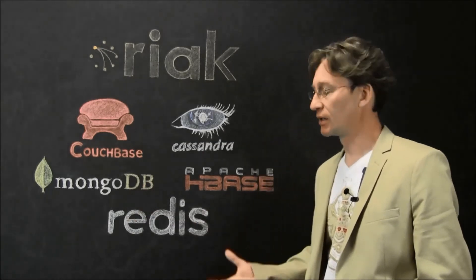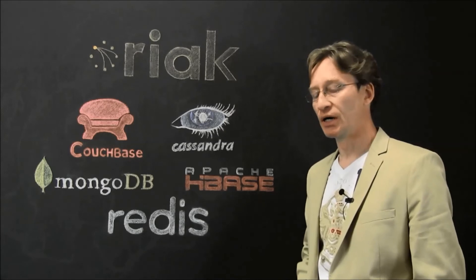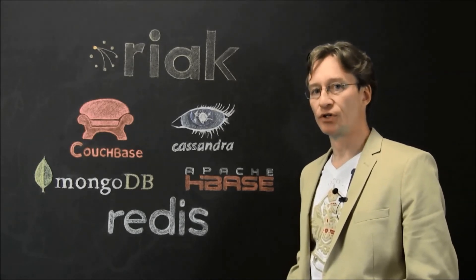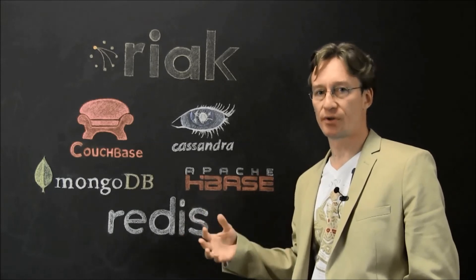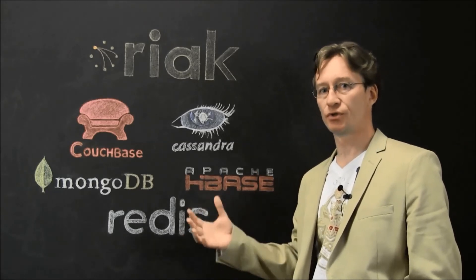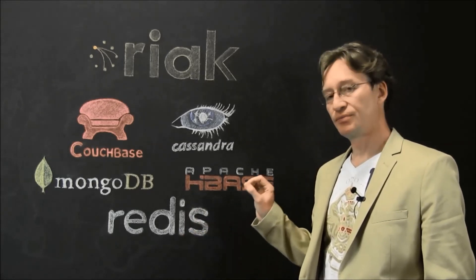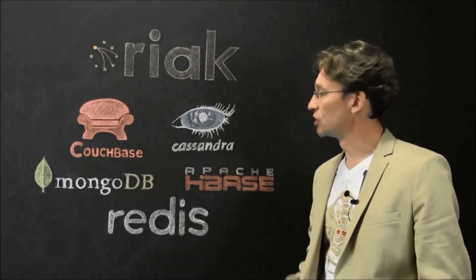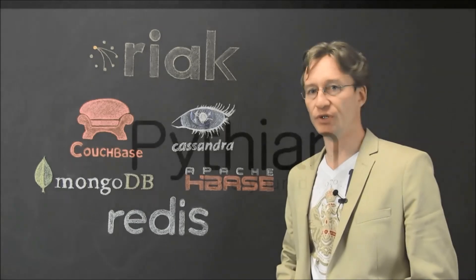Redis is an in-memory caching layer where you dedicate a subset of your data and store it mostly in memory for very fast response times, whether that's lots of reads, lots of writes, or both. So each of these technologies is mostly specialized in what they can do and when they should be used.